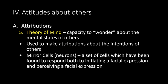Theory of mind is our capacity to wonder about the mental states of others. We use theory of mind to make attributions about the intentions of others — trying to figure out what that person is up to, what their motivation is. We have mirror cells, which are sets of cells that respond to both initiating a facial expression and perceiving a facial expression. We believe this is used to help us understand someone's motivation and emotional state, because it allows us to access those same emotions in ourselves by activating the same sets of neurons.